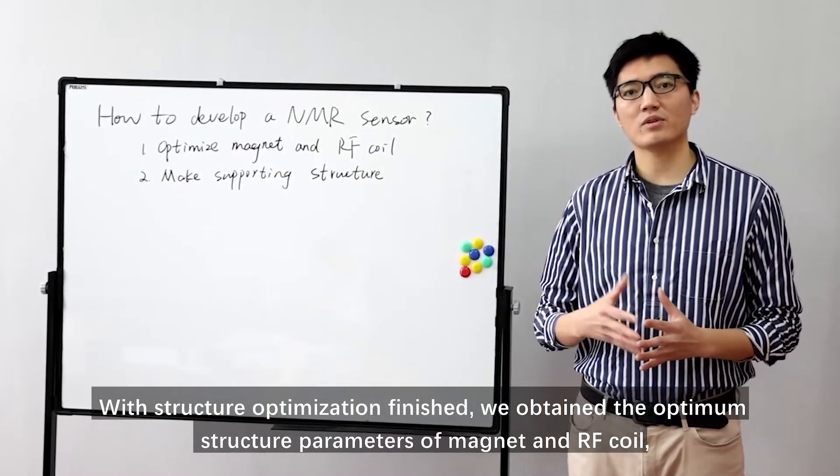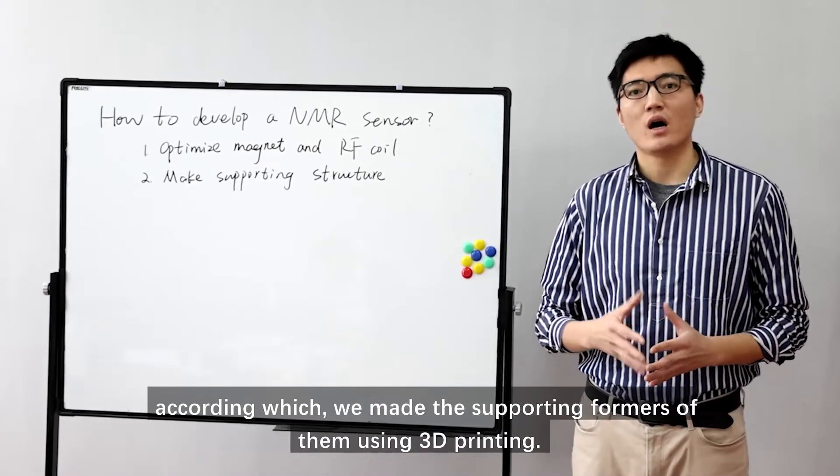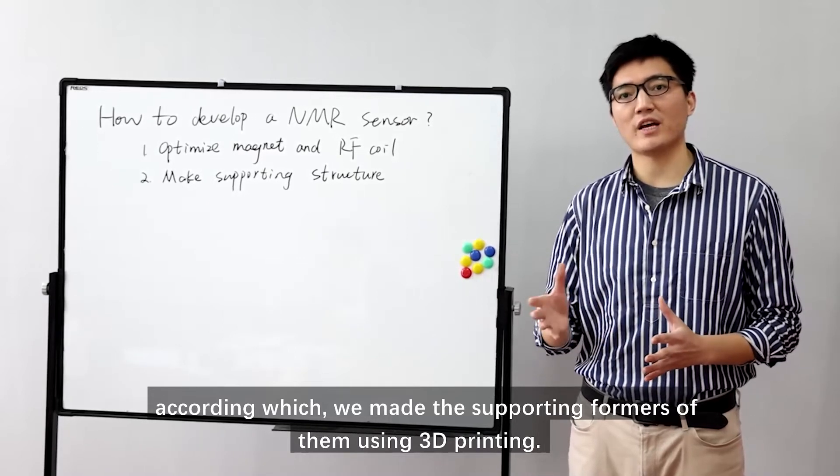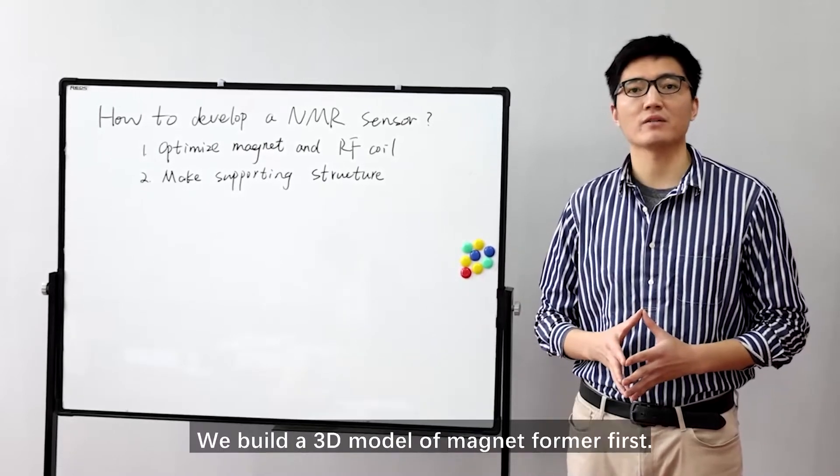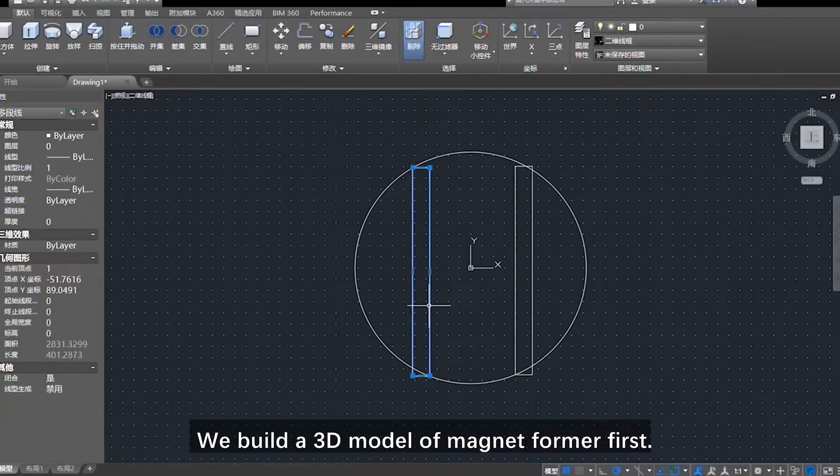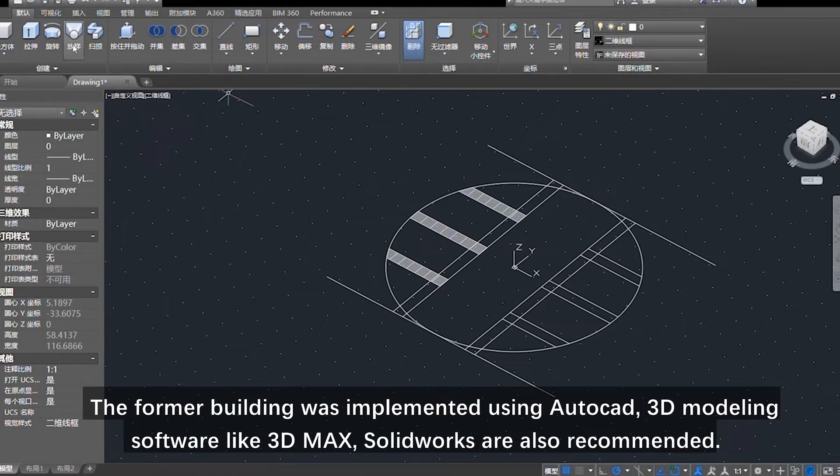With the structure optimization finished, we obtain the optimal structure parameters of magnet and RF coil, according to which we make the supporting former of them using 3D printing. We build a 3D model of magnet former first. The former building was implemented using AutoCAD. 3D modeling software like 3D Max and SolidWorks are also recommended.